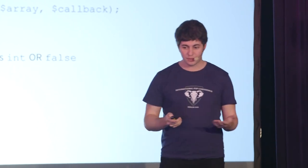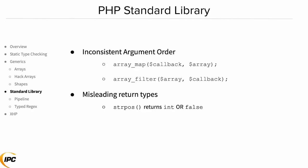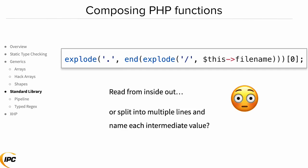Let's talk about the PHP standard library. It gets some flack for a couple of issues: one being the inconsistent argument order — I always have to look up array_map and array_filter and which one takes the array first. If you don't have static analysis set up, it's really easy to get this wrong. Another common issue is that built-in functions often return either the data type you want or false, and you have to check for both. From a type system perspective, there's not a good data type that represents those two types.